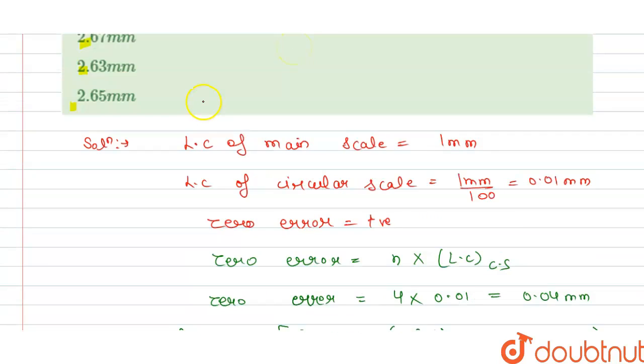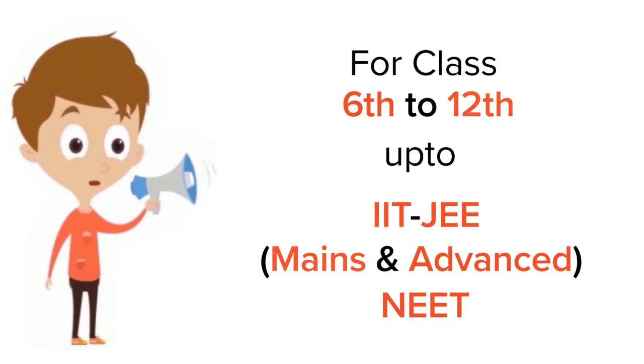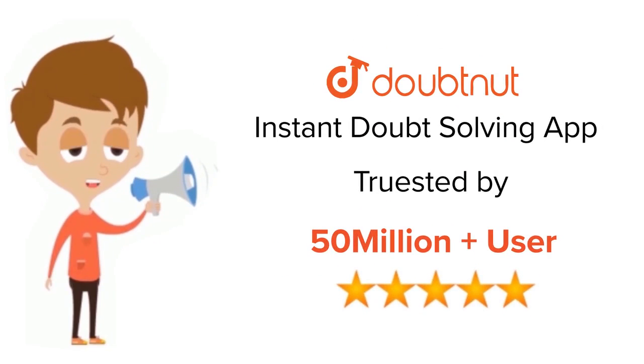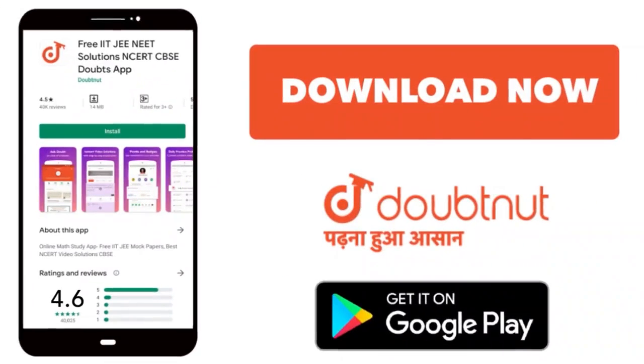Now we check which option is correct there, so our option C is correct. Thank you. For class 6-12, IIT-JEE and NEET level, trusted by more than 5 crore students, download Doubtnet app today.